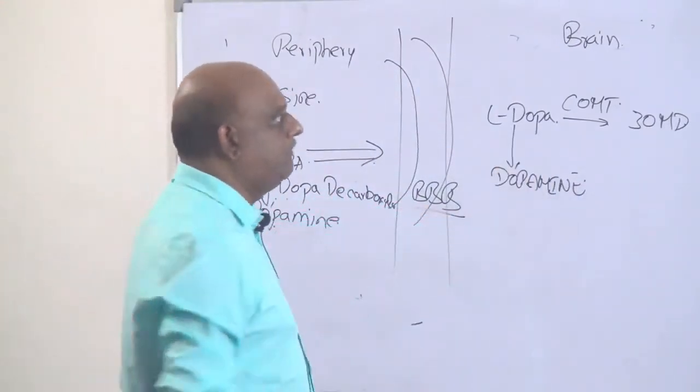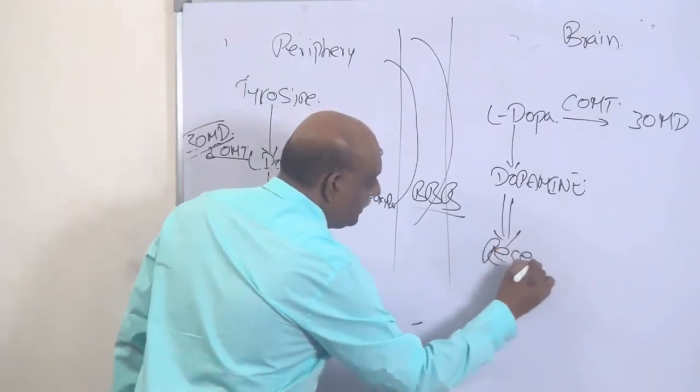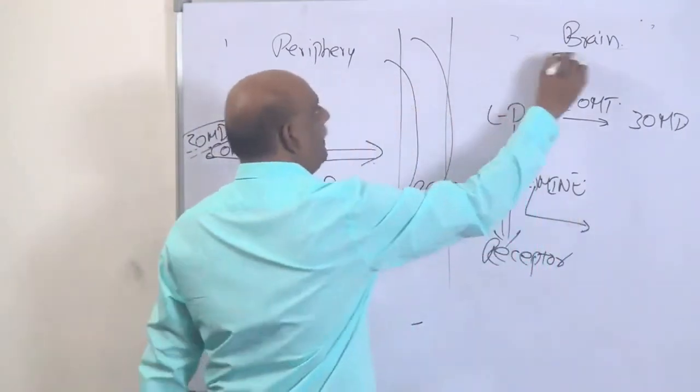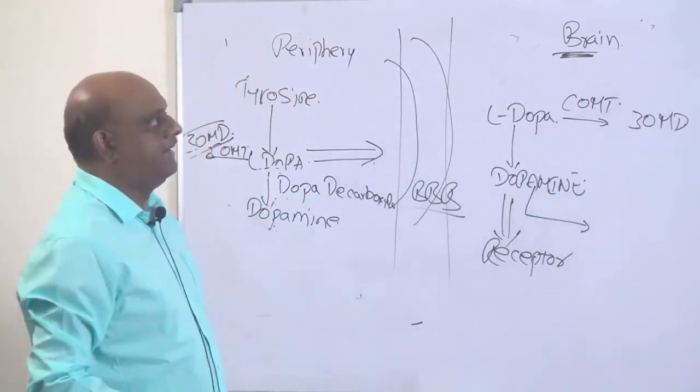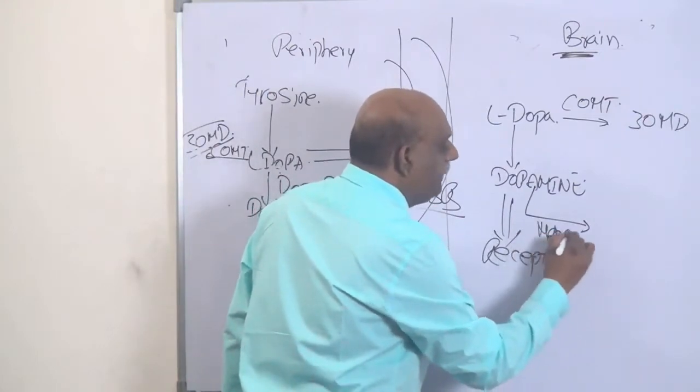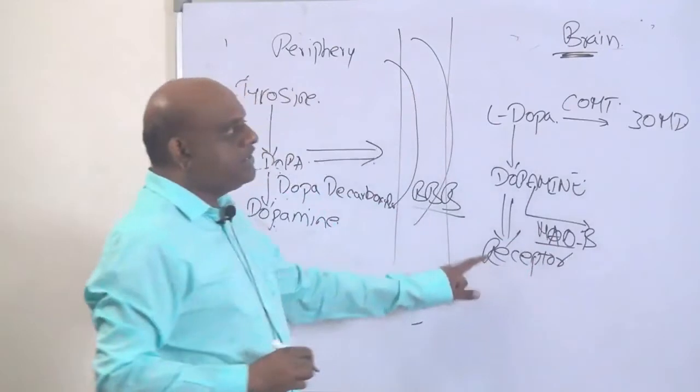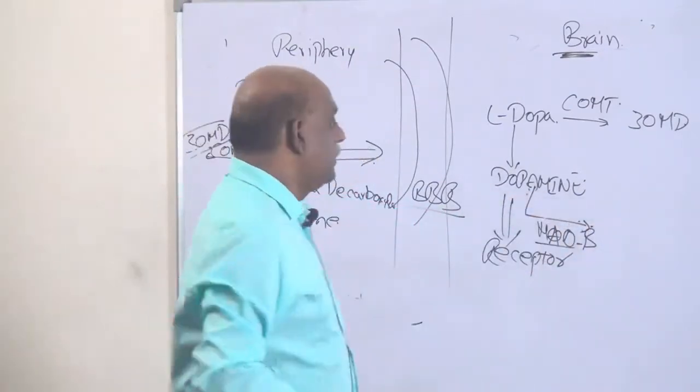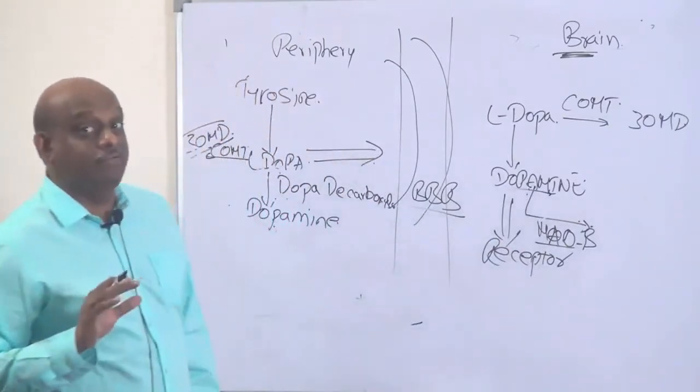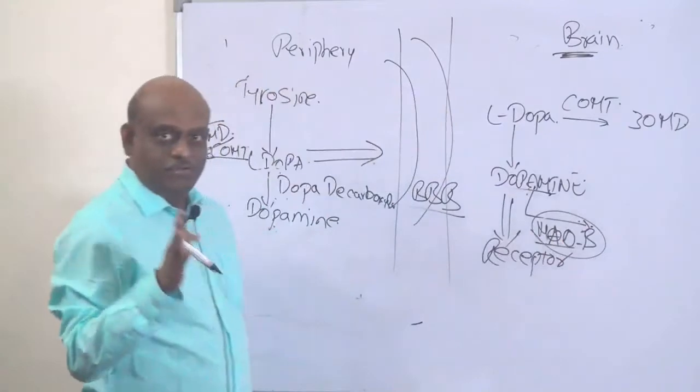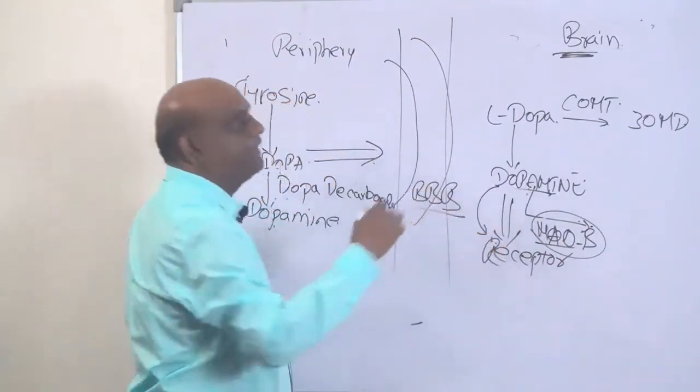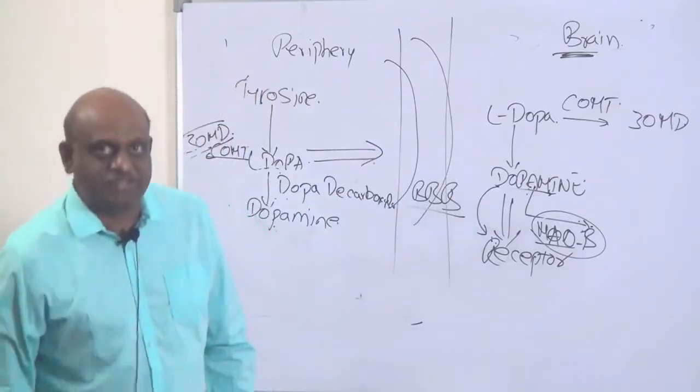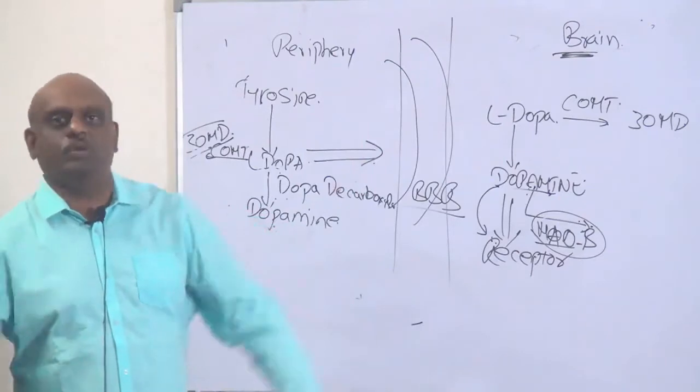Then dopamine in turn will act on its receptor. Then here there is one enzyme in the brain, only in the brain, not in the periphery. What is that which is available? MAO-B is the one which is available, which is trying to metabolize the dopamine. Then if dopamine can survive the MAO-B breakdown, then it can act on the receptor and it needs to act on the receptor. If the amount of dopamine available to act on the receptor is less, what you get is called Parkinsonism.